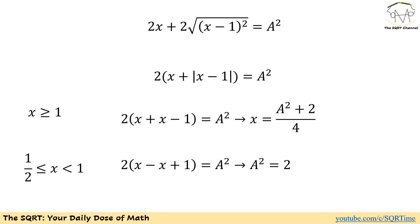Let's start with what we have for x greater than or equal to 1. For that case, the absolute value of x minus 1 is going to be x minus 1, and if we simplify everything, we are going to end up with x equals to A squared plus 2 over 4.